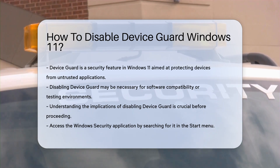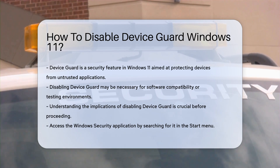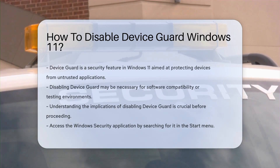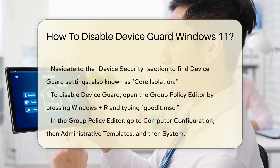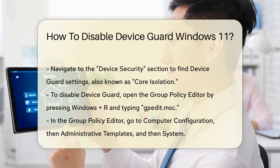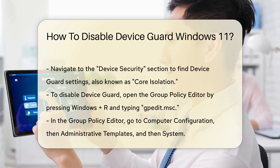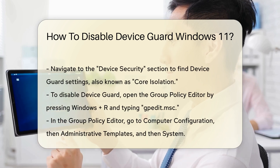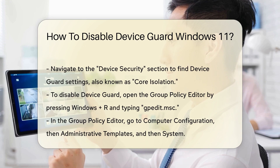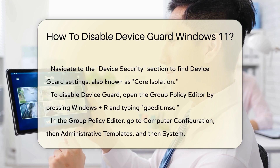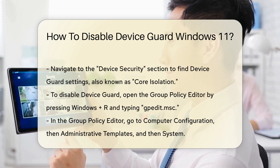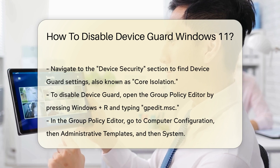First, access the Windows Security application. You can find it by searching in the Start menu. Once in Windows Security, navigate to the Device Security section. Here, you will see the Device Guard settings, which may be labeled as Core Isolation.